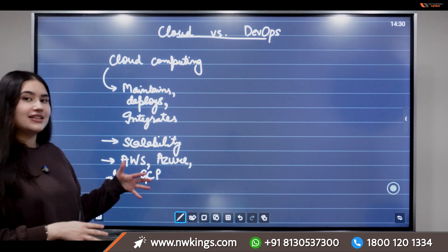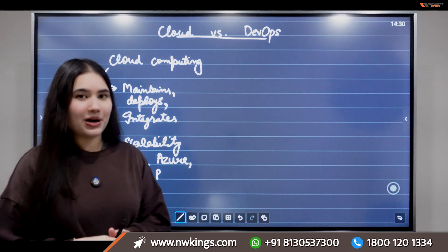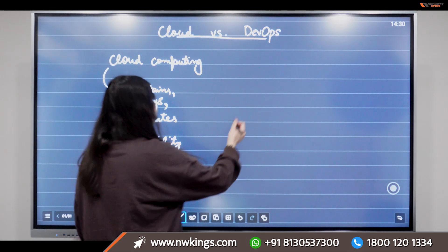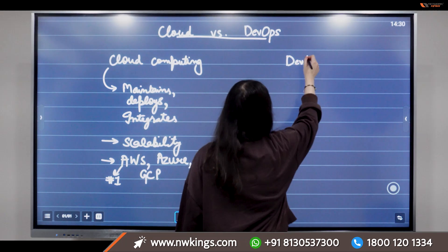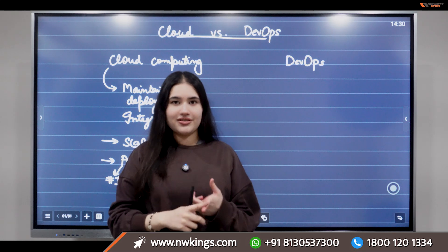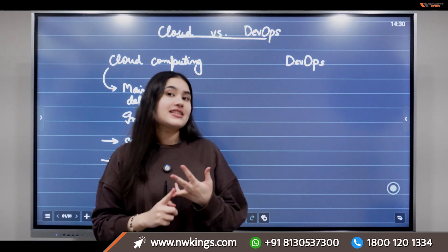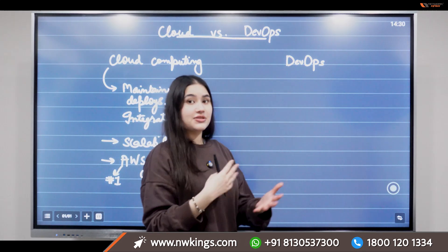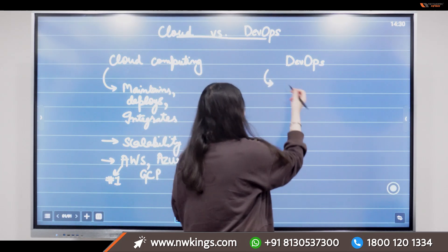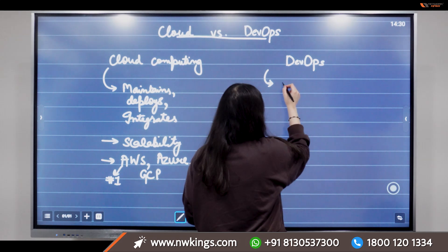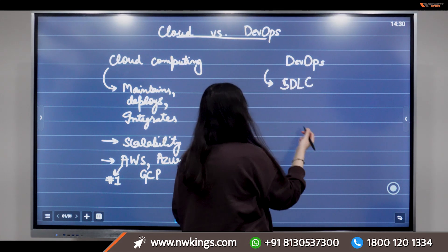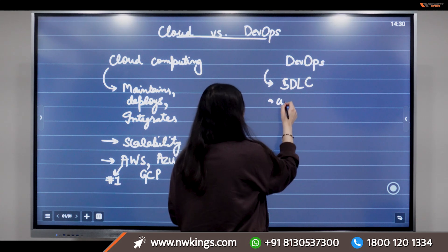Now let's talk about what DevOps is and what a DevOps engineer does. DevOps focuses heavily on collaboration, automation, and reducing the software development life cycle. The major focus of DevOps is minimizing the software development life cycle, and this happens through automation and collaboration.